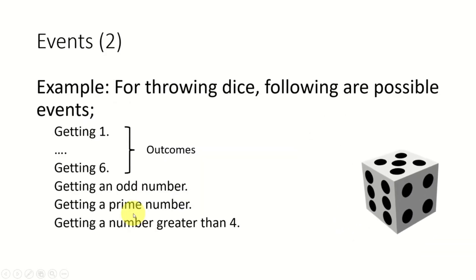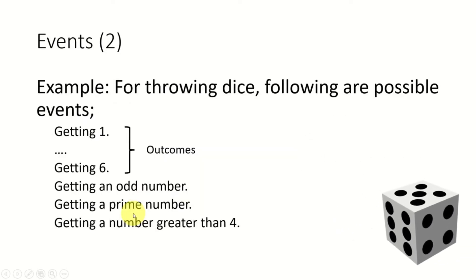Let's take the example of throwing a dice. Obviously, getting one to six are all possible events because they are outcomes. We can also think of events like getting an odd number, getting a prime number, getting a number greater than four, and so on. And our event can be a composite event like getting a number greater than four or less than two.